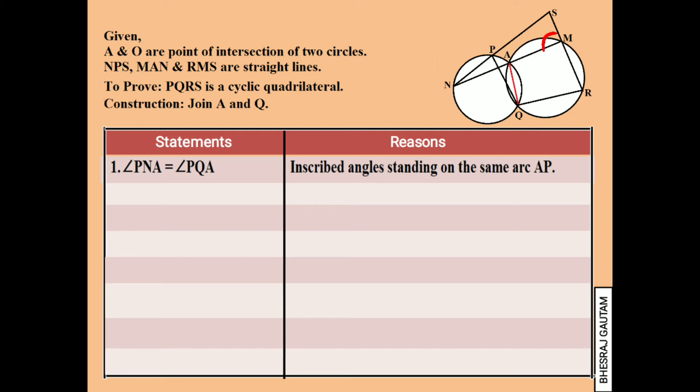In the triangle NSM, exterior angle AMR is equal to the sum of opposite interior angles, angle PNA and angle PSR. So we can write the same in statement 3. But from statement 1, we can replace angle PNA by angle PQA, and we can write angle AMR is equal to angle PQA plus angle PSR.